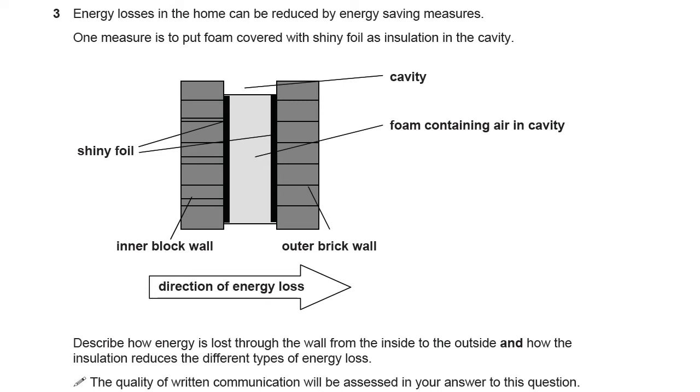Question 3 on this OCR Gateway P1 section. Energy losses in the home can be reduced by energy saving measures. One measure is to put foam covered with shiny foil as insulation in the cavity.